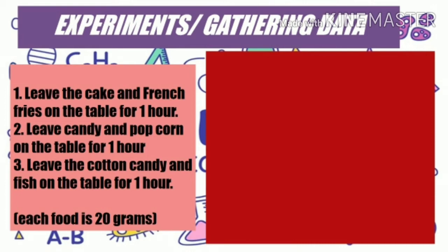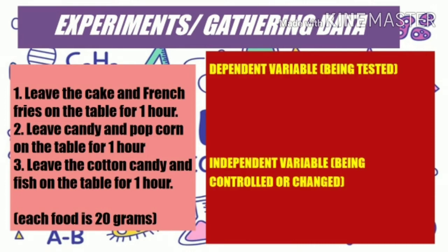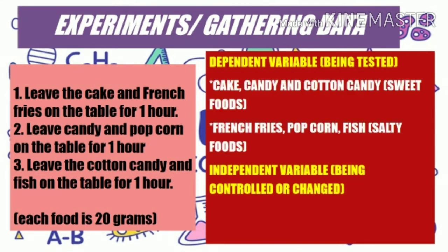Now let us identify the dependent and independent variables in the experiment. Dependent variables are the variables being tested. The dependent variables in this experiment are cake, candy, and cotton candy — the sweet foods — and french fries, popcorn, and fish — the salty foods. These are the variables we are trying to test: whether the ants will swarm sweet foods or salty foods.